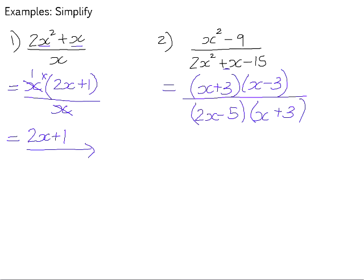Because if you do the outers, 2x times positive 3 is positive 6x. Negative 5 times x is negative 5x. And that gives you positive 1. You can now divide like factors by like factors. So the whole of x plus 3 can divide by x plus 3 and that gives us x minus 3 over 2x minus 5.